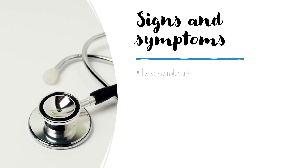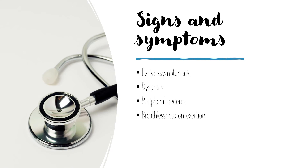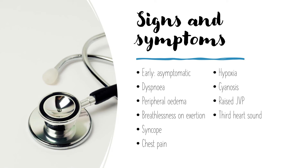Often these patients are asymptomatic in the early stages of the disease. They may then develop dyspnea, peripheral oedema as the backed-up blood flow leads to blood leaking into the tissues, breathlessness on exertion, syncope, chest pain, hypoxia, cyanosis, a raised JVP due to raised venous pressure from this backflow. Third heart sounds are heard in congestive heart failure from increased atrial pressure. Murmurs may occur, like a diastolic pulmonary regurgitation murmur, and hepatomegaly due to back pressure into the hepatic vein.